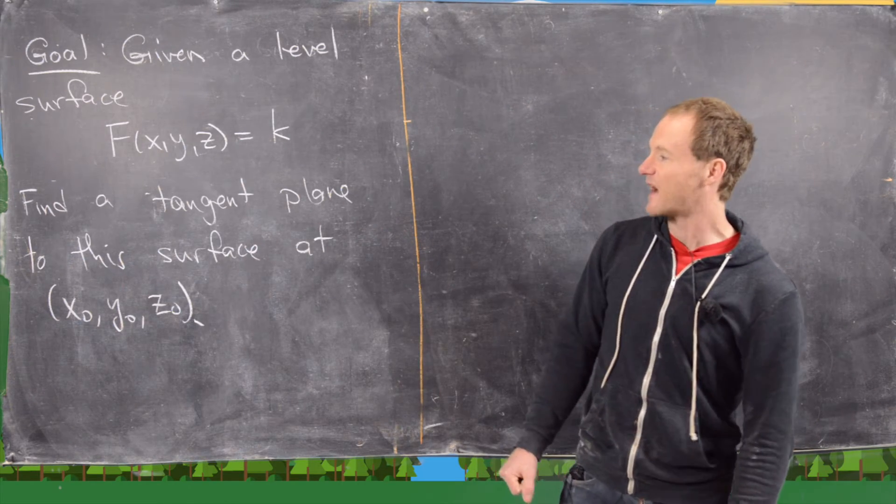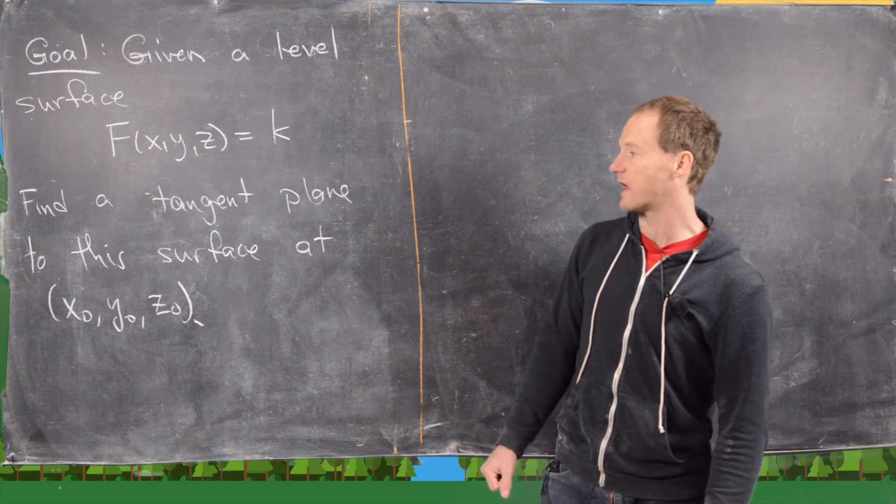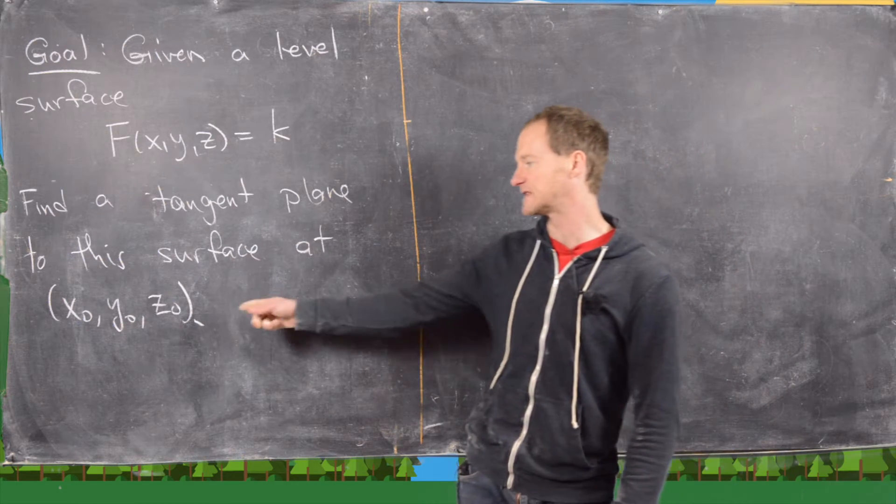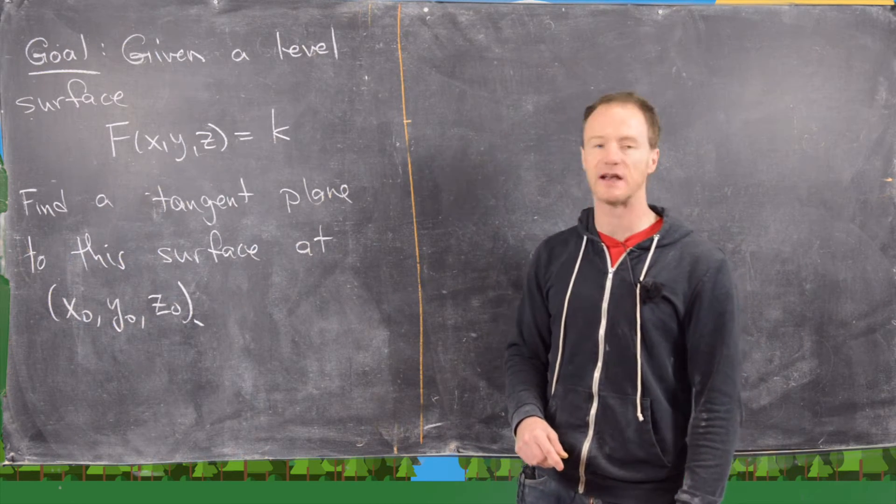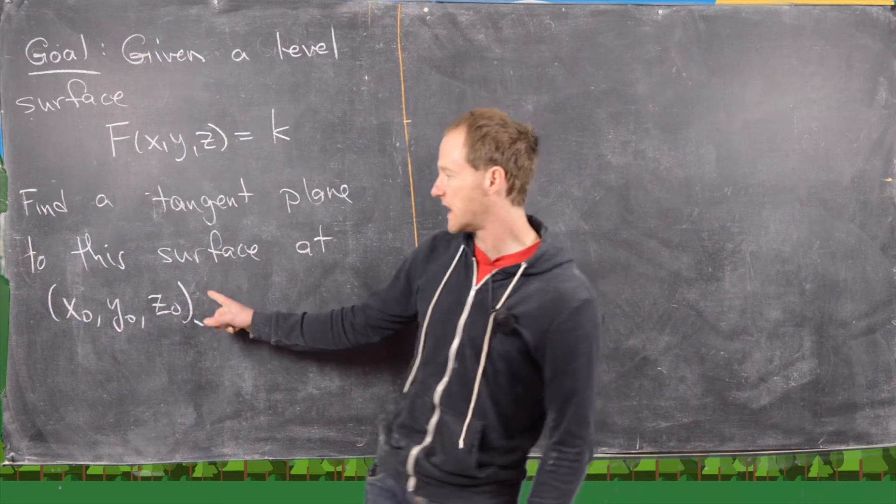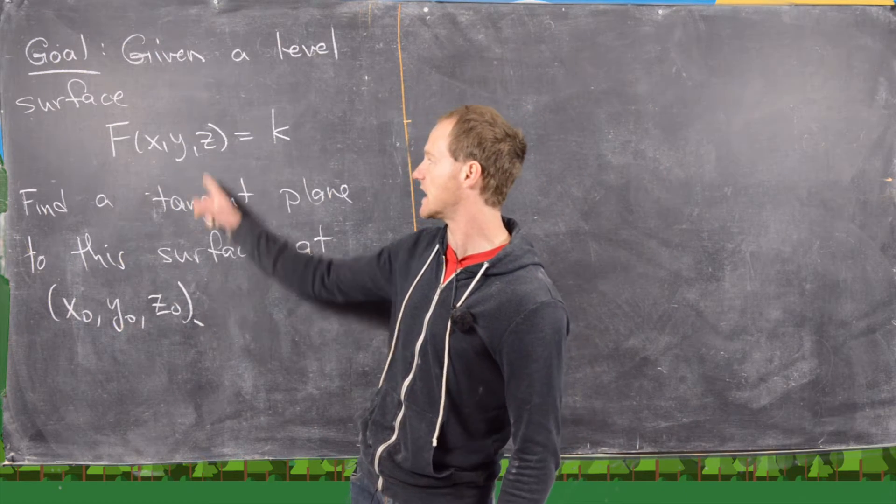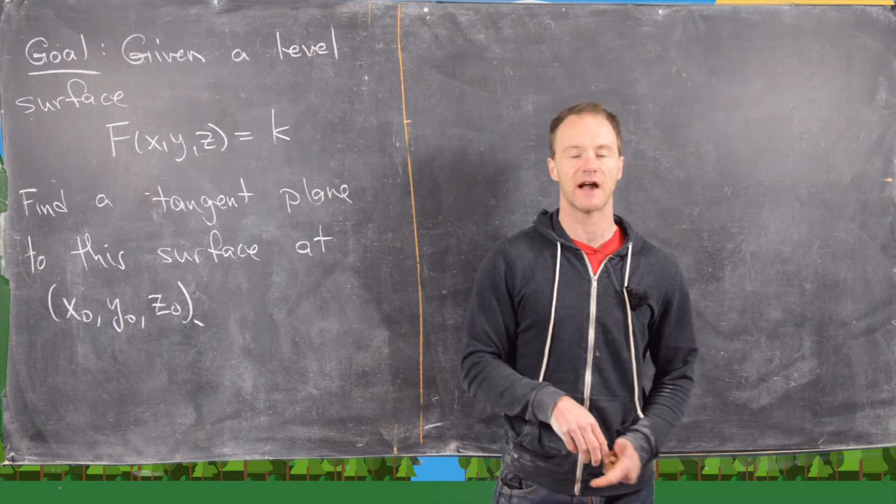And we want to find a tangent plane to this surface at some point, x naught, y naught, z naught. In other words, if we plug x naught, y naught, z naught into this, we get a satisfied equation.